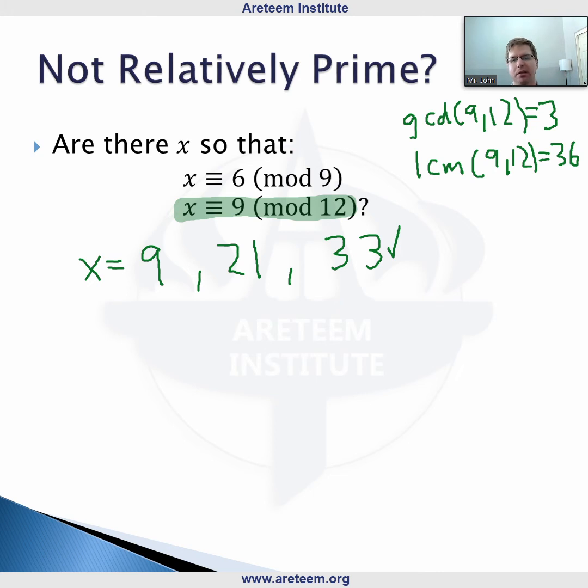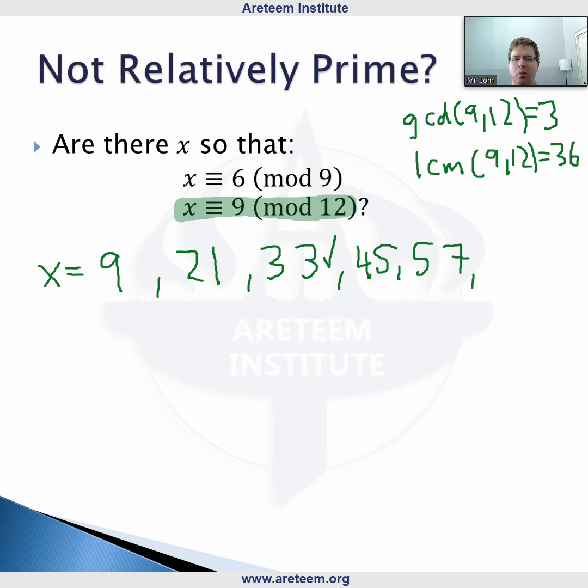We found 33 that works. Because the numbers are not relatively prime, I want to caution that our pattern is a little bit different. If we continued adding 12: we get 45, that doesn't work; we get 57, that doesn't work; we get 69, and that one does work. It repeats every three terms, which shouldn't surprise us because this is 36 more than the original.